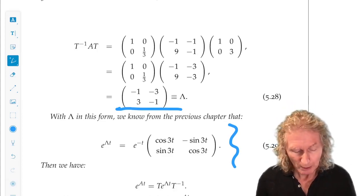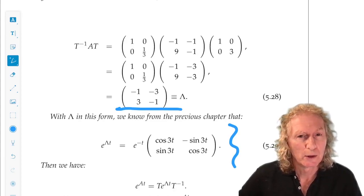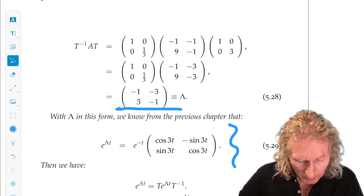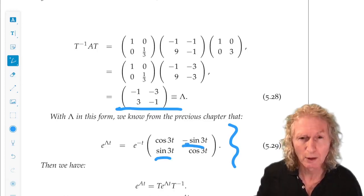We have cosine of the imaginary part times T down the diagonal, and sine of the imaginary part times T with a minus sign in the off diagonal.